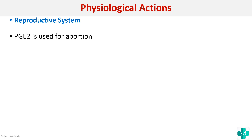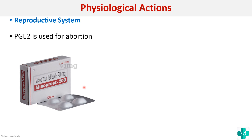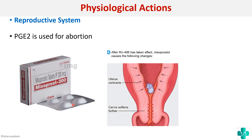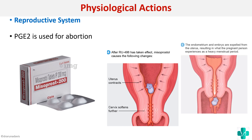Next we will see the action of prostaglandins on the reproductive system. PGE2 can be used for abortion; clinically, an example of this is misoprost. How does it cause abortion? It causes uterine contraction and the cervix softens, so the fetus or small embryo that has formed will be expelled from the uterus, just like having a heavy menstrual period. That is how PGE2 can be used for abortion.